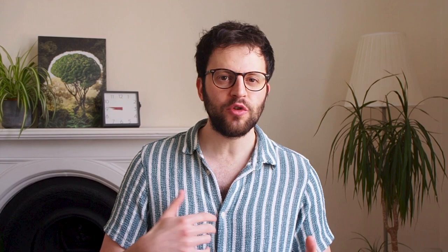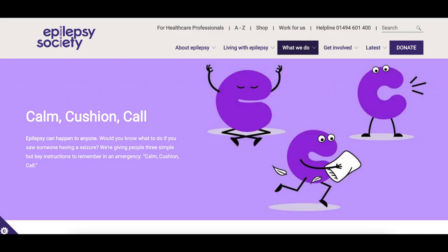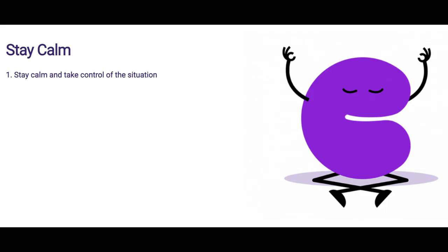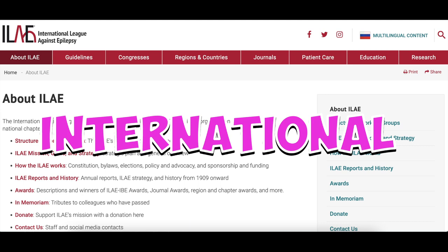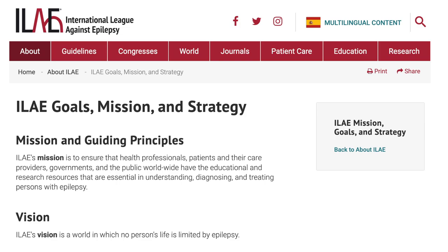If you're still watching at this stage, thank you very much, and you're probably very interested in epilepsy, so I'll just mention seizure first aid. The Epilepsy Society's current first aid approach is the three C's: calm, cushion, call. Stay calm, take control of the situation, cushion their head with something soft, and call for an ambulance. It's also good, if possible, to try and get a video of the seizure — providing you know the person and they would be okay with that — because a video can help the doctors afterwards to diagnose what happened and inform treatment. The International League Against Epilepsy is a global organisation dedicated to advancing the understanding and treatment of epilepsy, helping to fund and organise research around the world, and is also the group that classifies seizures.